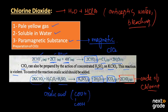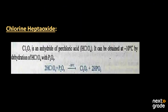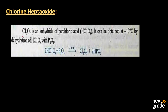The second oxide of chlorine is chlorine heptoxide (Cl2O7). It is an anhydride of perchloric acid (HClO4) — removal of water from HClO4 gives Cl2O7. It can be obtained at minus 10 degrees Celsius by dehydrating HClO4 with phosphorous pentoxide (P2O5), yielding chlorine heptoxide and phosphoric acid (H3PO4). This was a simple overview of the oxides of chlorine and fluorine.